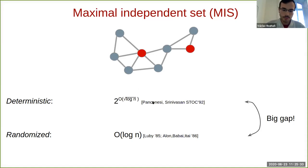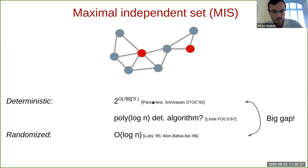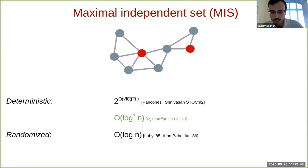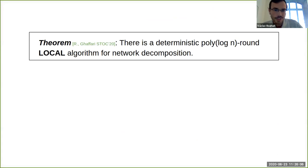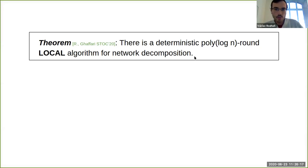For maximal independent set, this is the famous question of Linial: is there a polylog n round deterministic algorithm? We answer this question affirmatively. Our actual technical contribution is a simple deterministic polylog n round local algorithm for network decomposition, which is quite a general problem. As a quick application, we get a deterministic algorithm for maximal independent set — but actually we get much more.